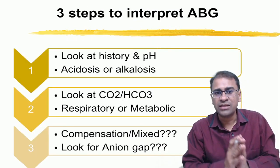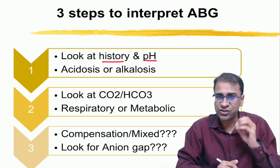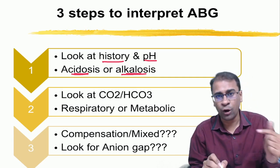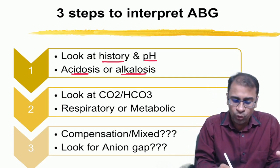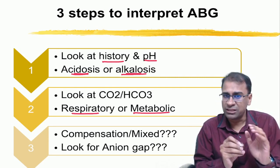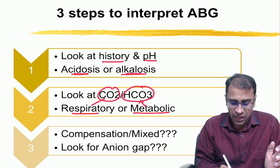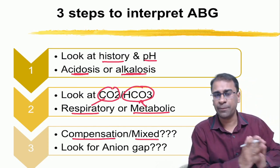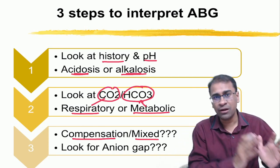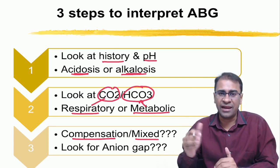Look at the three steps to interpret ABG. The first step is to look at the history and the pH to decide acidosis or alkalosis. Second, when you identify acidosis or alkalosis, see what is the basic cause — is it respiratory or metabolic? For respiratory, look at CO2; for metabolic, look at bicarb. The third step is to assess compensation or mixed disorder — understand the change of bicarb for CO2 and vice versa.